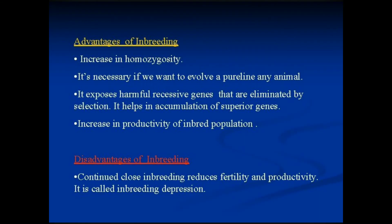This is an example of full sib mating, in which a male gives two births so that two kids — one male and one female — are produced. These male and female are then mated, and the consequences may include illness, death, and unthrifty kids. This is a disadvantage of inbreeding.